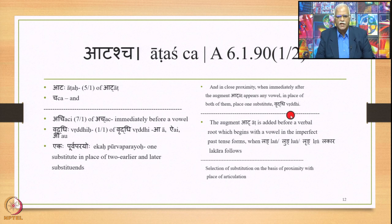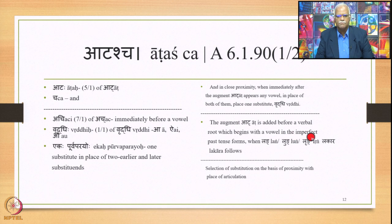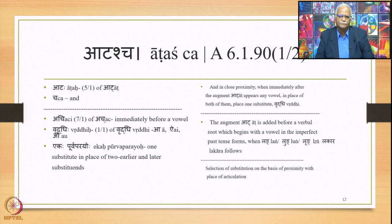Now, what is the Aat augment? The Aat augment is added before a verbal root which begins with a vowel in past tense forms — imperfect past and other past tense forms such as Lang, Lung, and Rung Lakar. When these follow, the Aat augment is added. Selection of the substitution is based on the place of articulation.